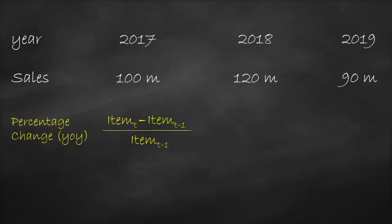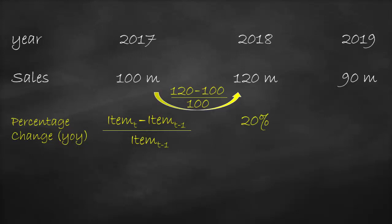The formula means the value of a certain item at a certain year minus the value of the same item at a previous year, all divided by the value of the same item at a previous year. So the percentage change in 2018 is $120 million minus $100 million, all divided by $100 million, which is equal to 20%. This means that the company has higher sales by 20% in 2018 compared to the previous year of 2017.